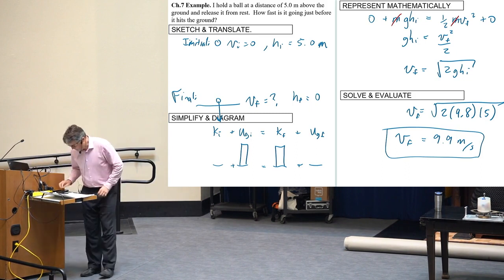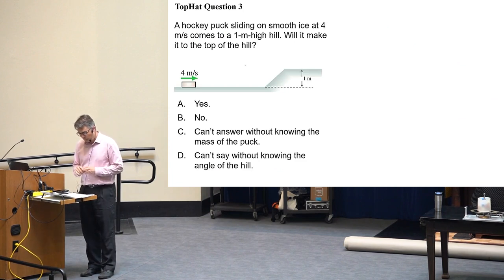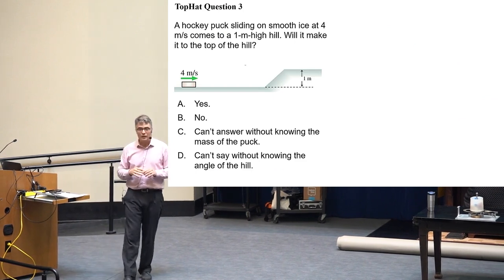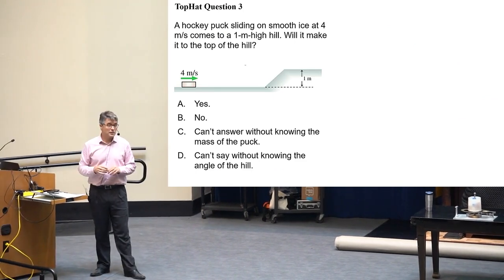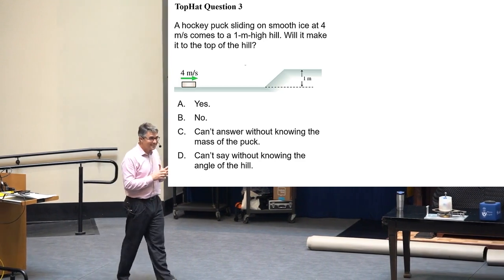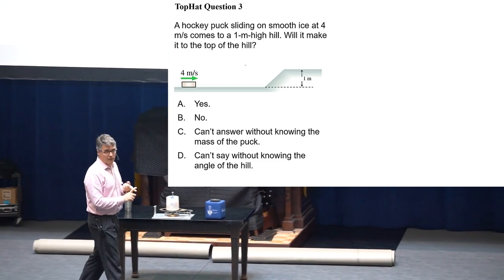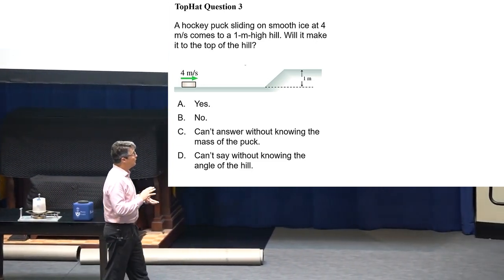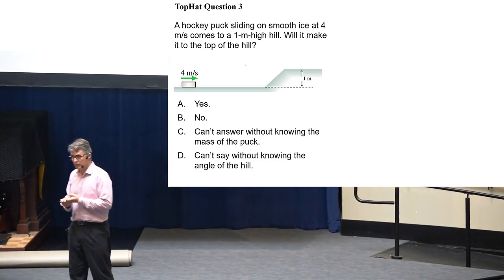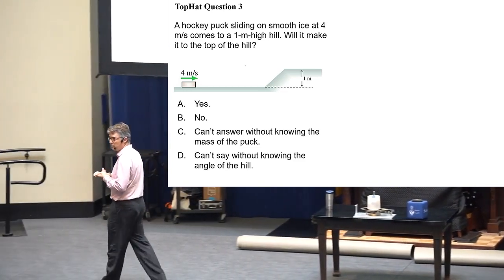Okay, let's do another top hat question. A hockey puck is sliding on smooth ice at four meters per second. And then it goes up a smooth one meter high hill. Will it make it to the top? So it's just a yes or no. A yes, B no. Although I think you might need to work something out. I've left some room for doing some math here. C is you can't answer without knowing the mass of the puck. That's the problem. Or D, you can't answer without knowing what the angle of this hill is, which I haven't shown here. So if you can answer it, answer it. If you can't answer it, answer C or D.